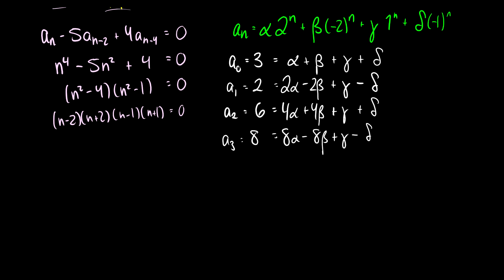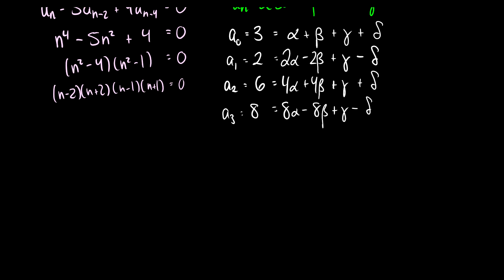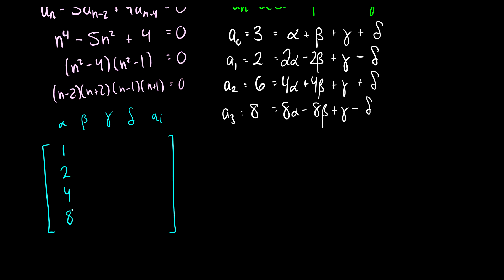At this point we're going to change this into a matrix that we can use to solve. The columns represent alpha, beta, gamma, delta, and then our a_i values. So the matrix is: alpha column [1, 2, 4, 8], beta column [1, -2, 4, -8], gamma column [1, 1, 1, 1], delta column [1, -1, 1, -1], and the right-hand side [3, 2, 6, 8].